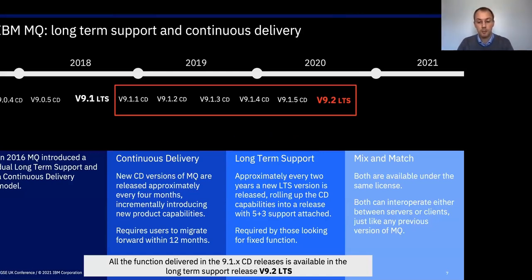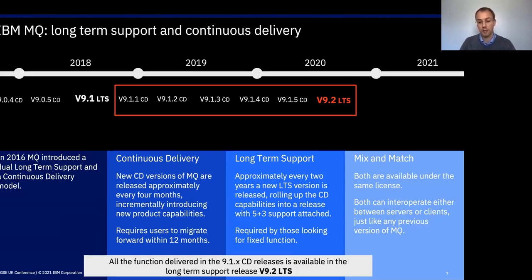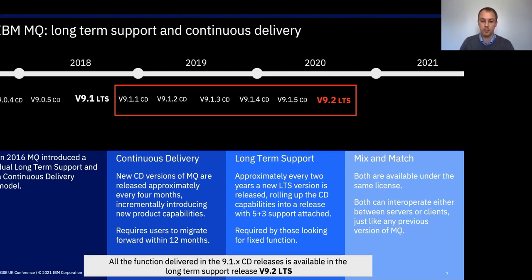If we look at how MQ has been evolving, we actually have two variants of MQ that you can consume. We have a long-term support release, which is our traditional model whereby we provide a new release approximately every couple of years. We then provide corrective maintenance and fixes via individual fixes or fix packs to allow you to maintain a stable environment whilst getting the fixes you need. You do not have functional enhancements on that long-term support release after it's been released.